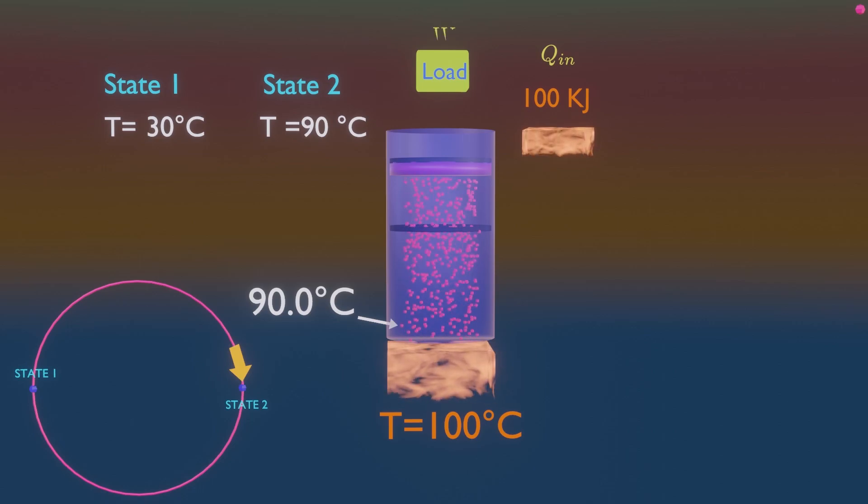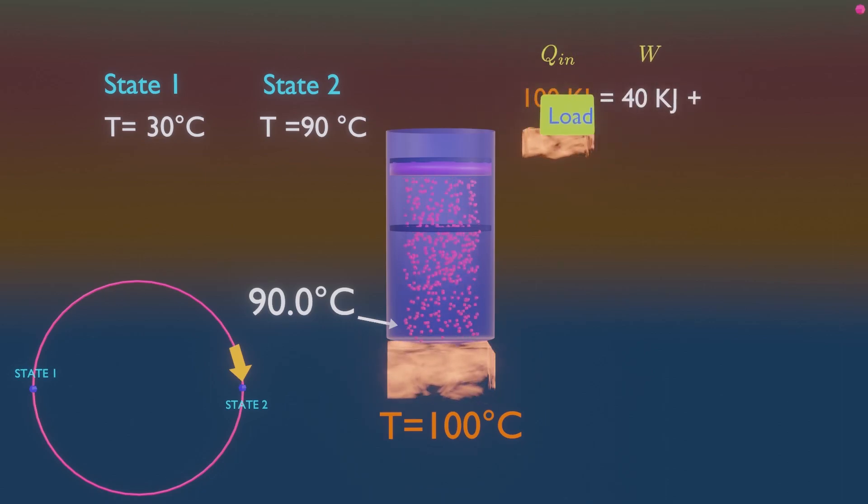The work done on the load during this expansion is equal to the increase in its potential energy, say 40 kilojoules. Look, even under ideal conditions, the amount of heat supplied to the gas is greater than work done.